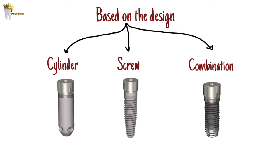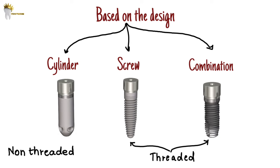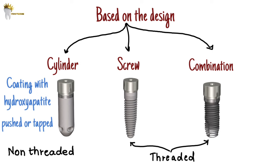We can also call them threaded and non-threaded. The cylinder root form implant depends on a coating with a rough material like hydroxyapatite or surface conditioning to provide microscopic retention in bone. These implants are usually pushed or tapped into a prepared bone site. The advantage is they can be placed in difficult access locations, for example in the posterior regions of the maxilla, or if the adjacent tooth has a tall clinical crown. They also have more bone-to-implant contact percentage. An example is endopore implants.